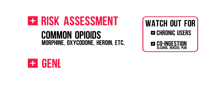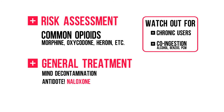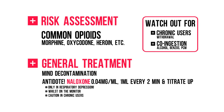Go through the general steps of treatment as discussed in the introductory video. Note the contraindications for decontamination if the patient is comatose. There's an antidote for opiates called naloxone, which blocks the opiate receptors. Naloxone should only be given in respiratory depression, whilst on the monitor, and with extreme caution in chronic users as they could go into withdrawal, which results in a sympathomimetic toxidrome. Dilute 0.4mg in 10cc of normal saline, so you get a 0.04mg per milliliter solution. Give 1mL every 2 minutes, and titrate up until the patient starts breathing again. Note that the duration of action is about 1 hour, so your patient will need continuous infusion on a medium or critical care unit.